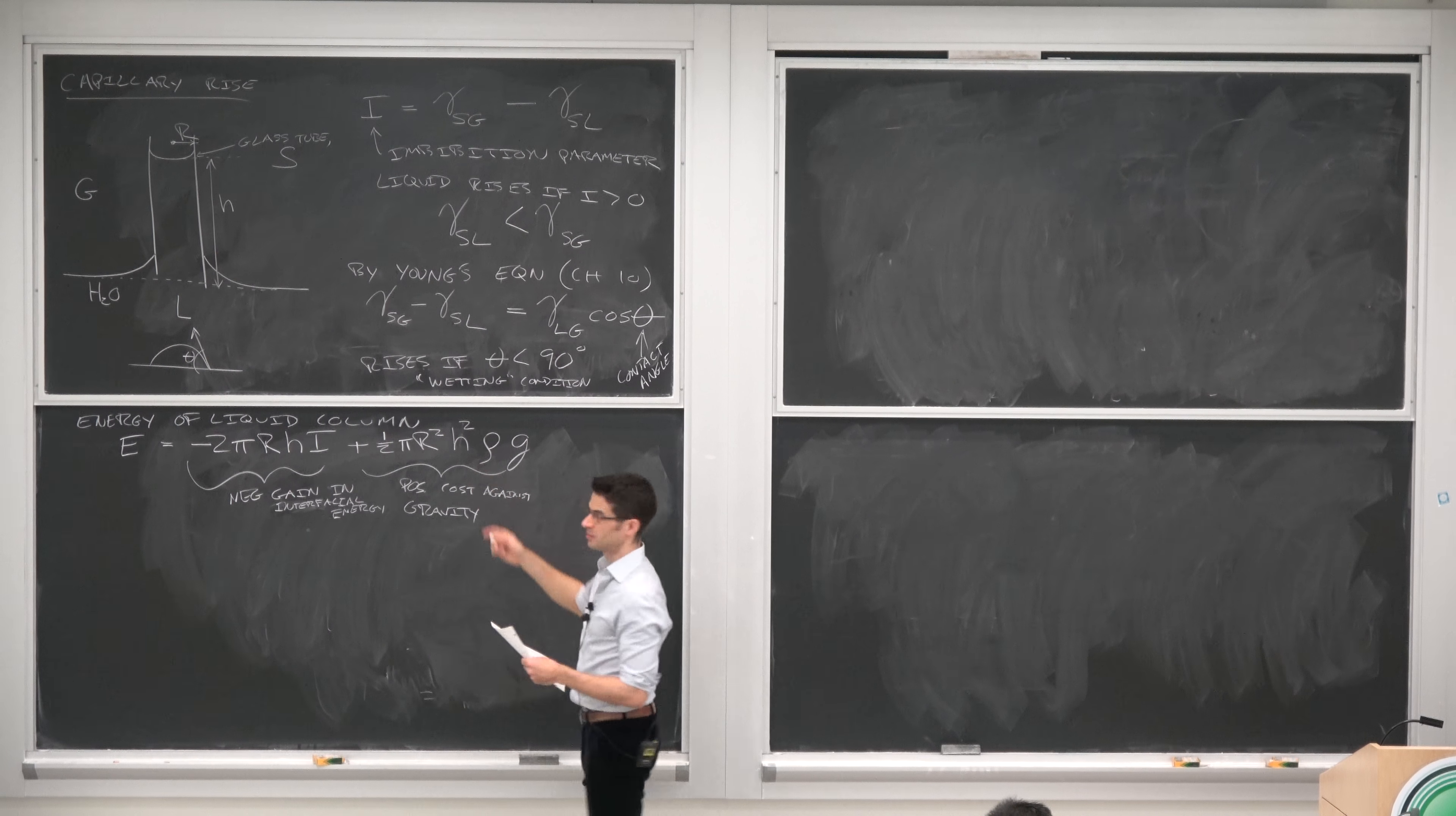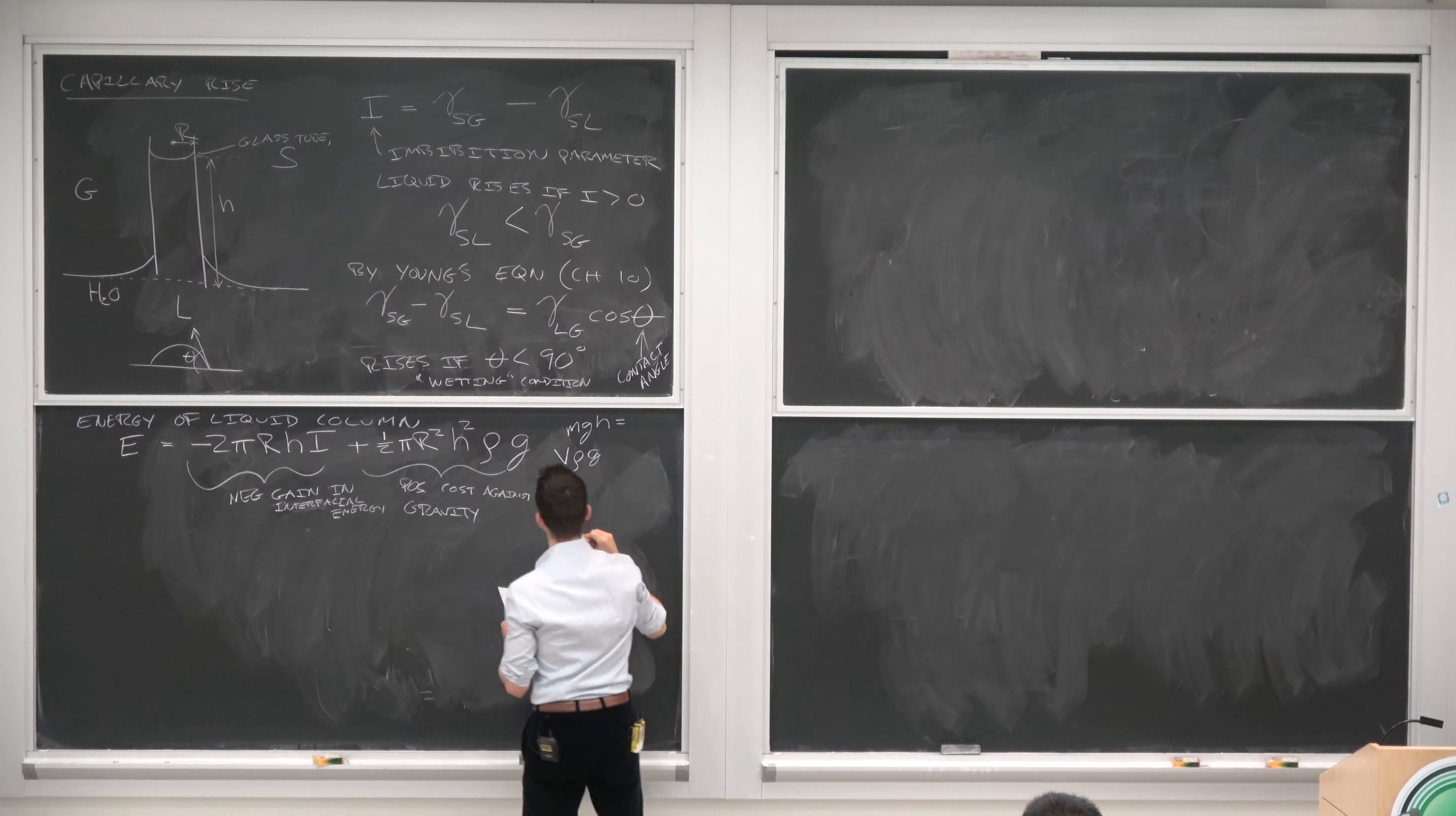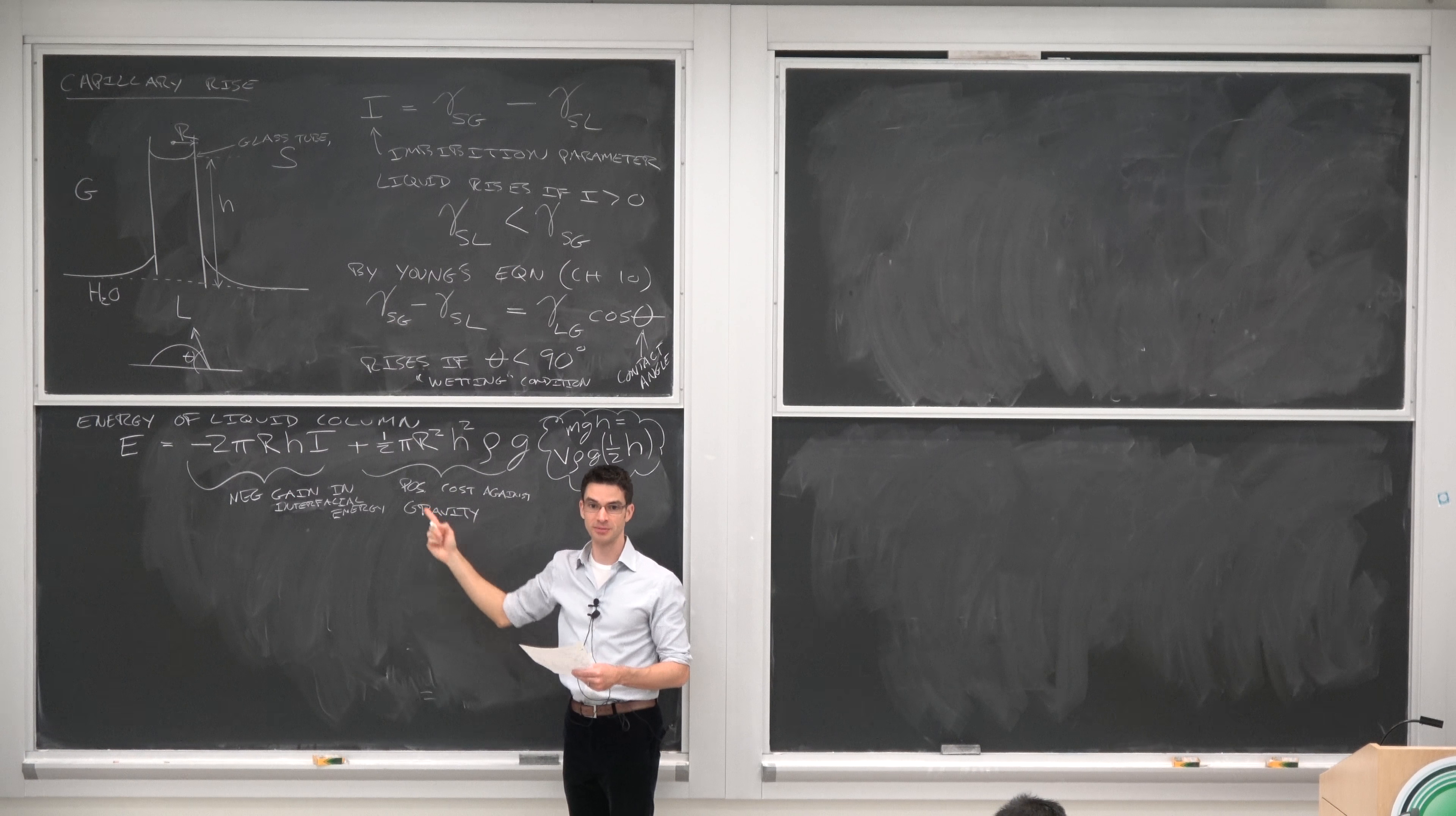Where did this come from? It's really just MGH written in a funny way. So MGH in this case equals the volume of the cylinder of liquid times rho times G. Now it's not H at the top of the liquid. It's H at the center of mass, which is one half H. So that's where the one half comes from, and that's where this term comes from.